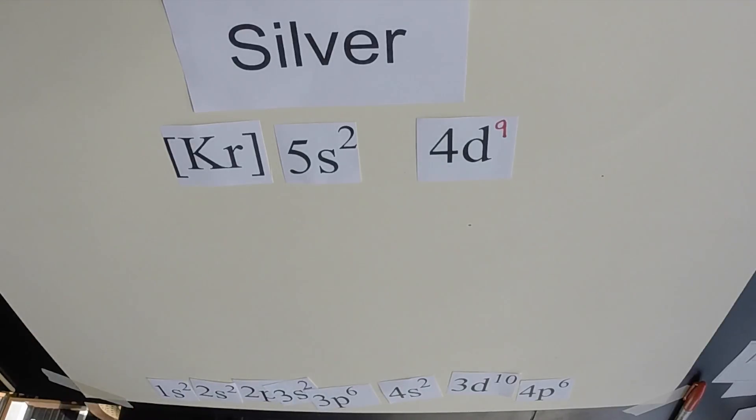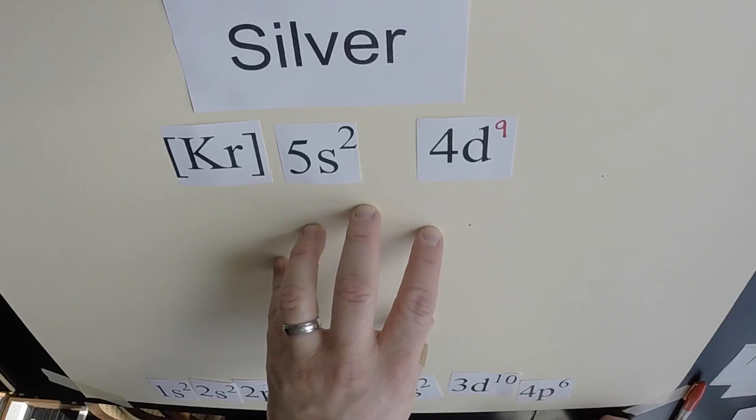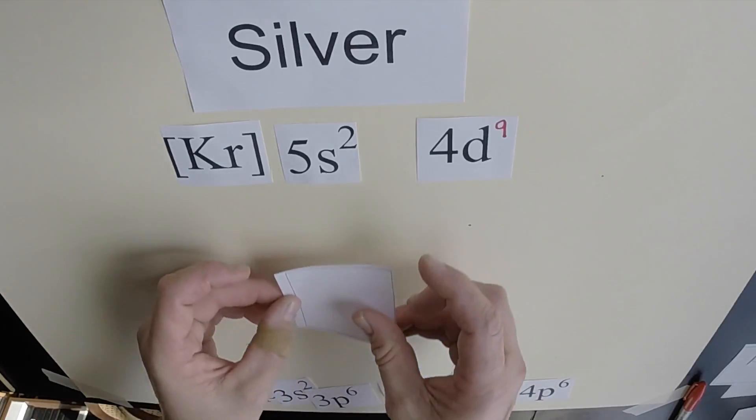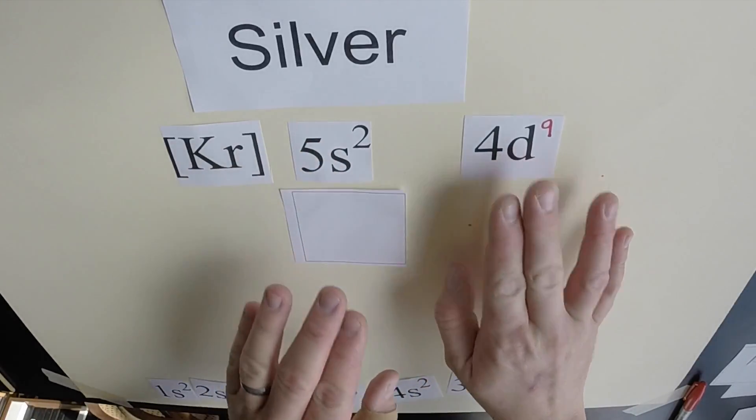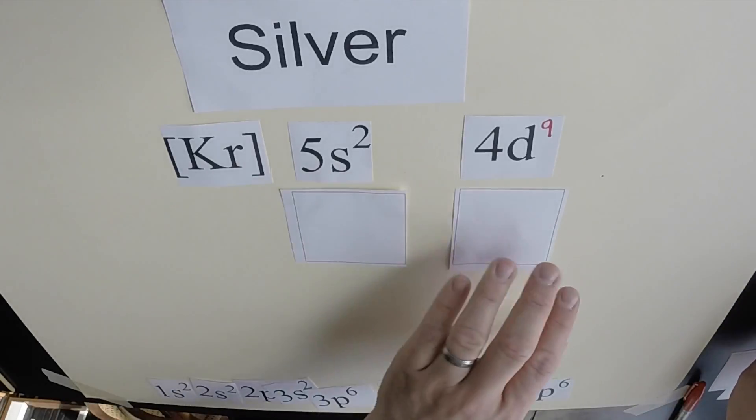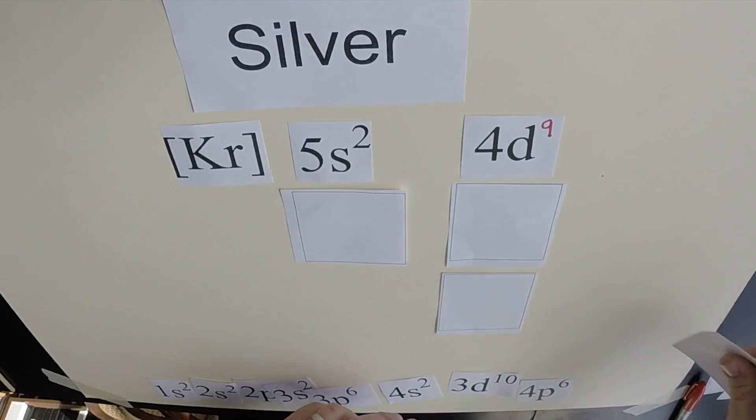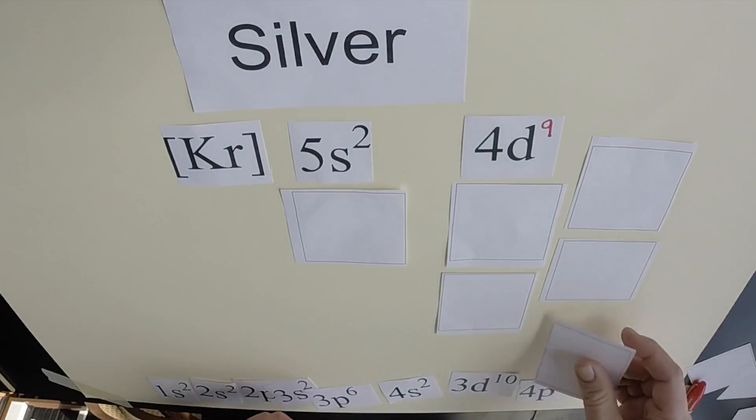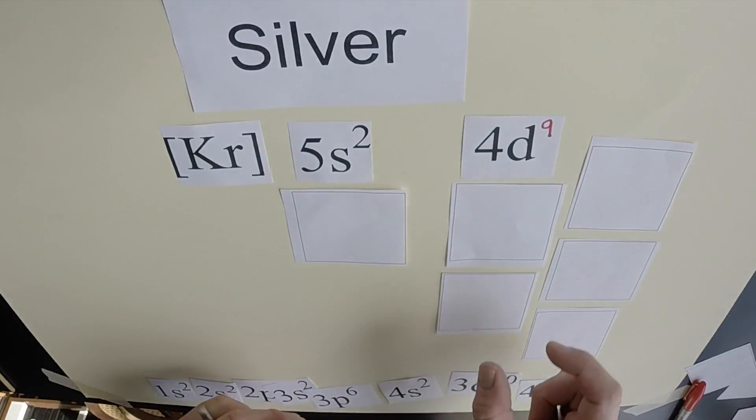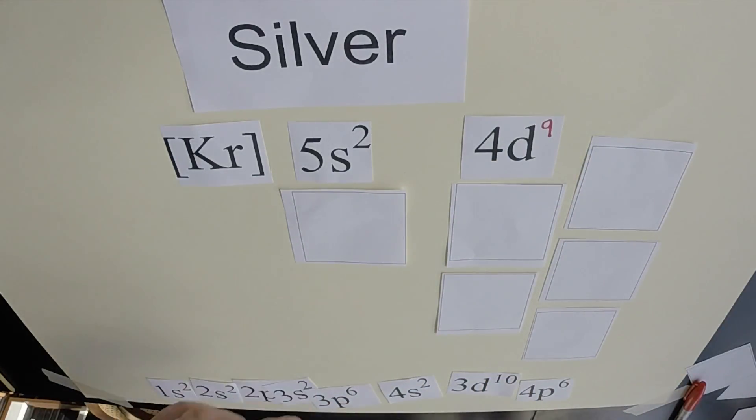Now, finally here, let's do an orbital diagram for silver. And we'll do the orbital diagram just for the noble gas shortcut. So 5s, we have one orbital. 4d, we have, that's right, five orbitals: 1, 2, 3, 4, 5. I'm going to place them like this. You could place them in one single line down your paper if you were doing this.